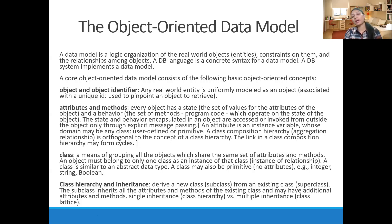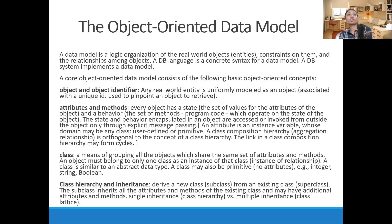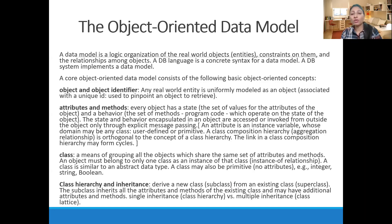In an object-oriented database management system or data model, there are also constraints and relationships — similar to RDBMS, which has foreign key, primary key, and referential integrity constraints. In programming structures no constraints are used, but in OODBMS we use constraints and relationships among objects, such as one-to-one, one-to-many, and many-to-many.